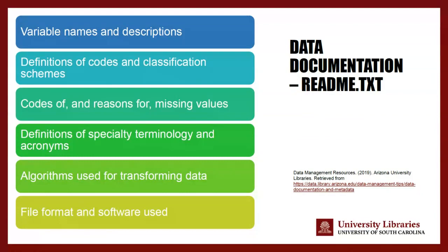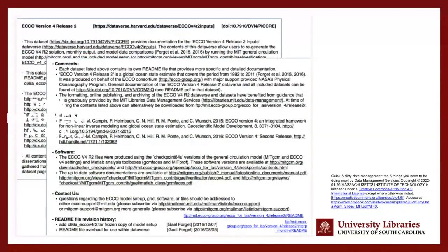We'll see an example of one in just a little bit. Here is what data documentation could look like — it is just some descriptive information. This particular data documentation file includes comments and the software used during the course of the research, as well as contact information for the original research team. It appears this documentation file was included in a directory of files submitted to a data repository — I can see "Dataverse" in the background, which is a research data repository. This data was publicly shared, so when someone finds the data and wants to reuse it, they can open this README file and get context to help them understand.